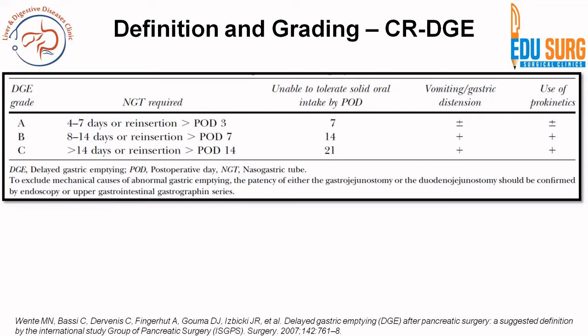Looking at the definition of delayed gastric emptying: this is the standard ISGPS grading. DGE grade A is defined as 4 to 7 days of nasogastric tube requirement, or reinsertion of the nasogastric tube after post-operative day 3, with inability to tolerate solid oral intake by post-operative day 7, with or without vomiting, gastric distension, and use of prokinetics. Grade B requires nasogastric tube for 8 to 14 days or reinsertion after post-operative day 7. Grade C is more than 14 days or reinsertion after day 14, with inability to tolerate solid oral intake by post-operative day 21. So the upper limits are 7, 14, and 21 days respectively for grades A, B, and C.